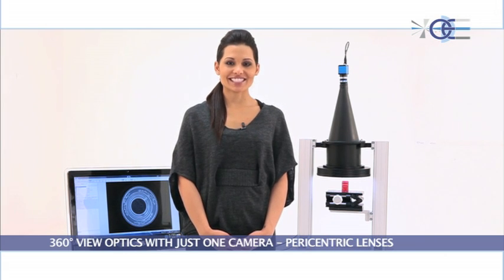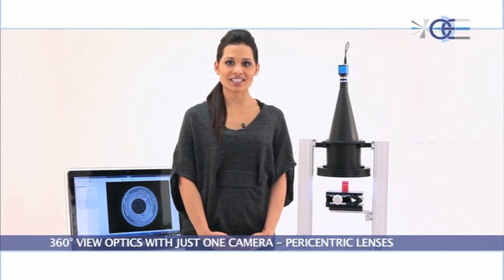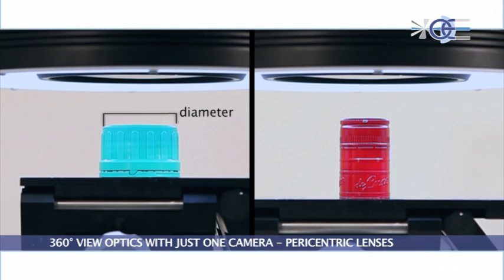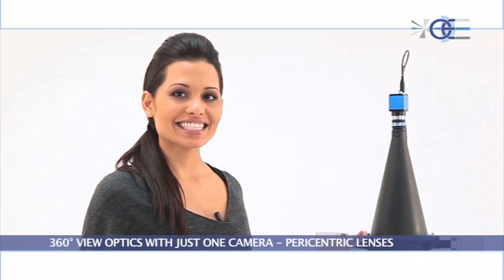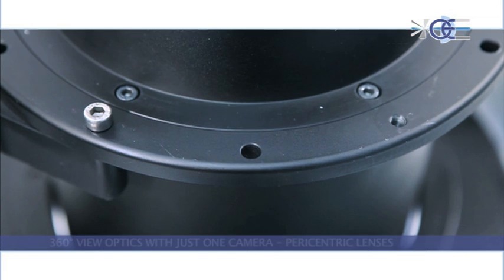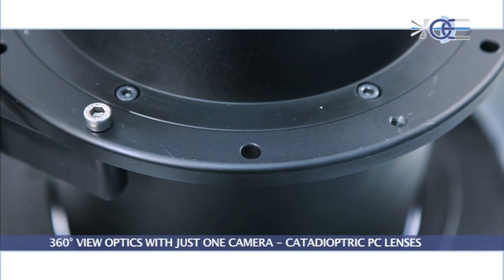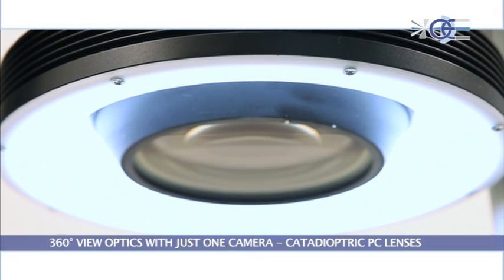Paracentric lenses are designed to work with half-inch and one-third-inch detectors. The working distance varies depending on the object diameter — the larger the diameter, the closer it must be to the front of the lens. On the other hand, the smaller the diameter, the further it must be placed in order to optimize the resolution. Fixing the lens is very easy, and specific ring light illuminators can be positioned directly onto the lens.